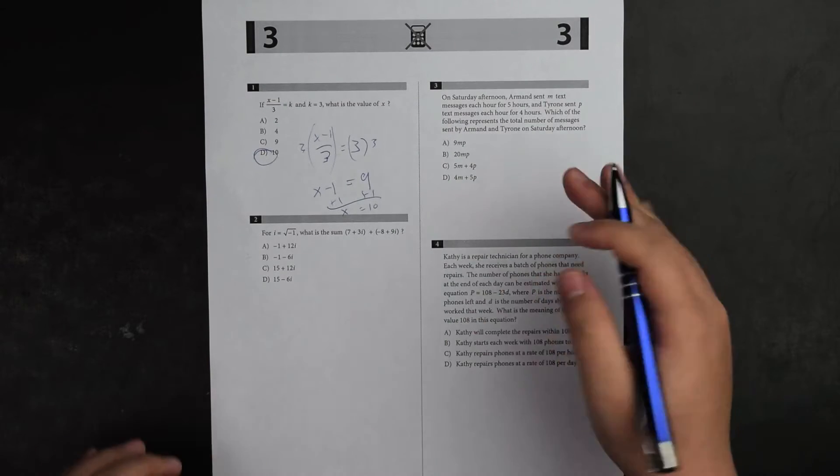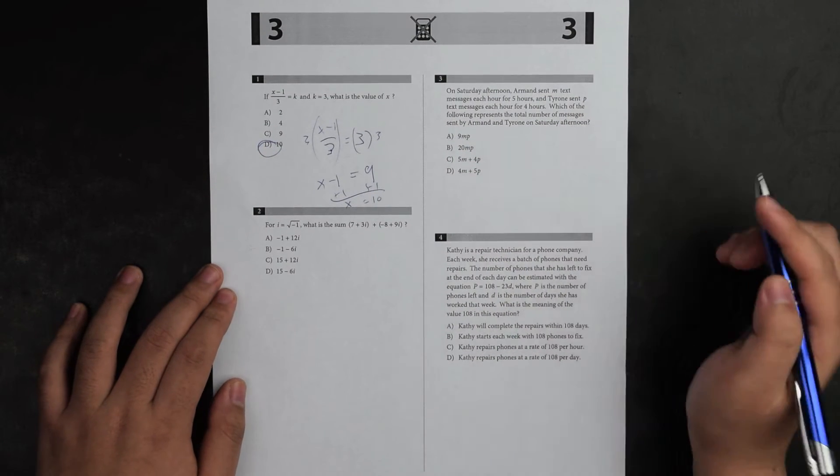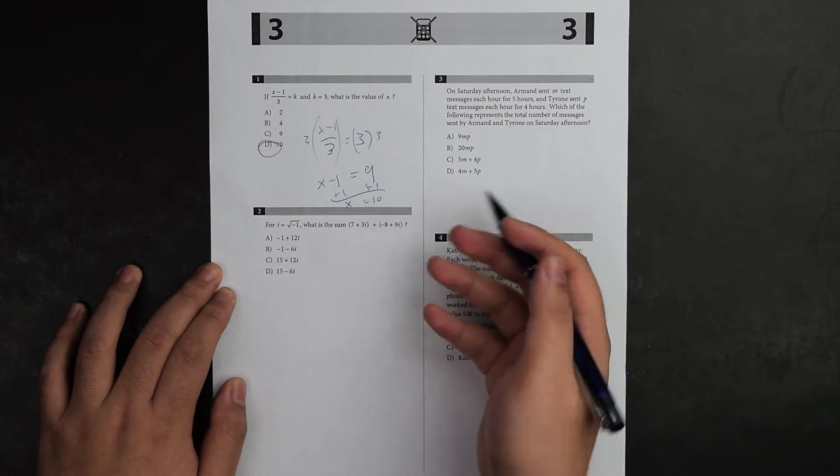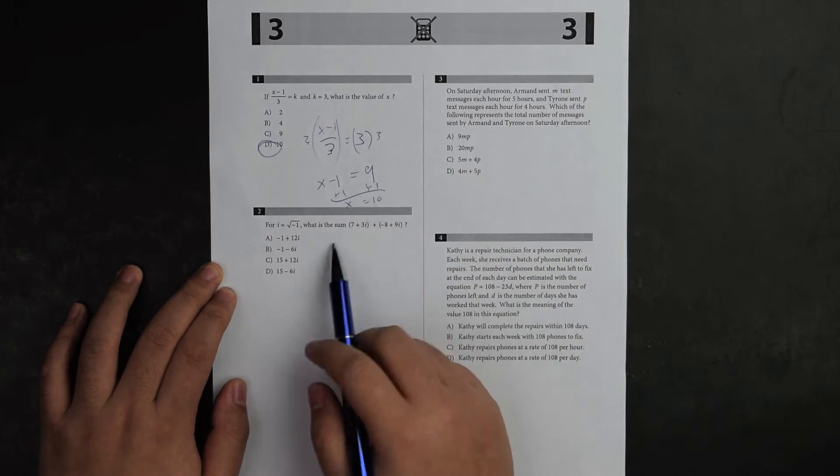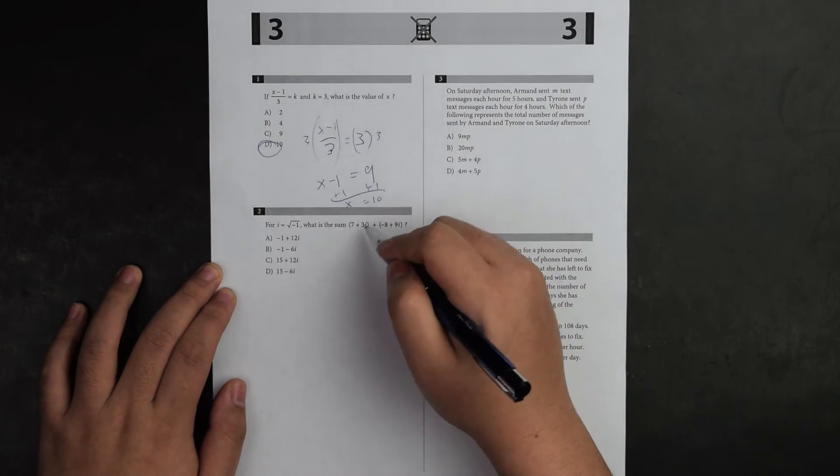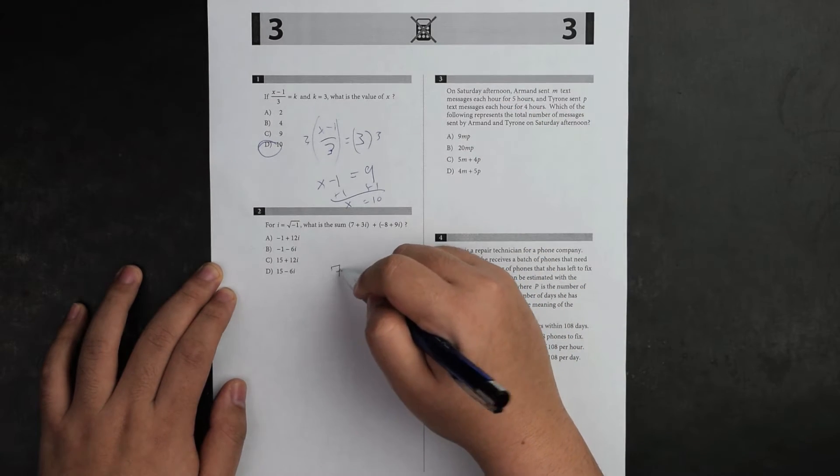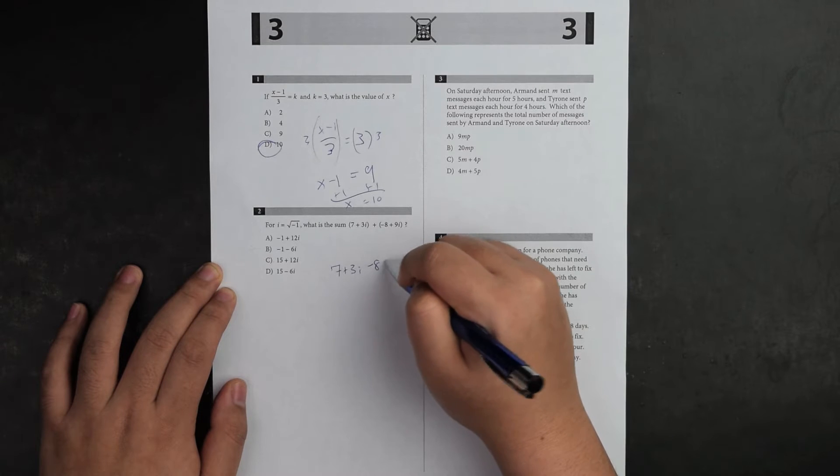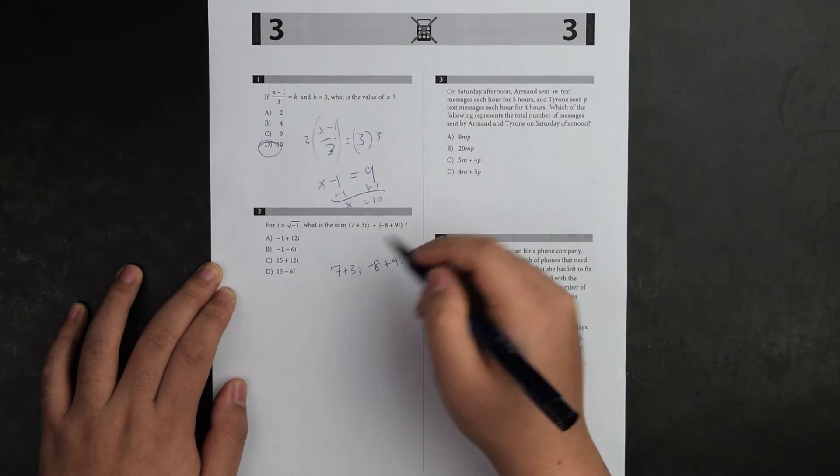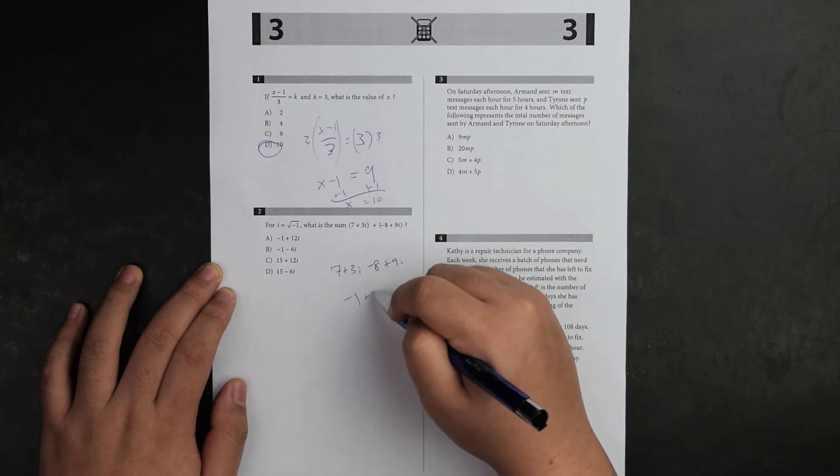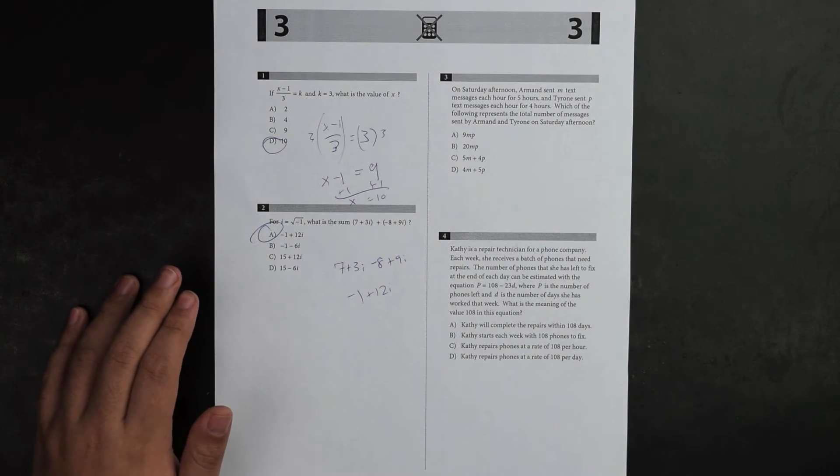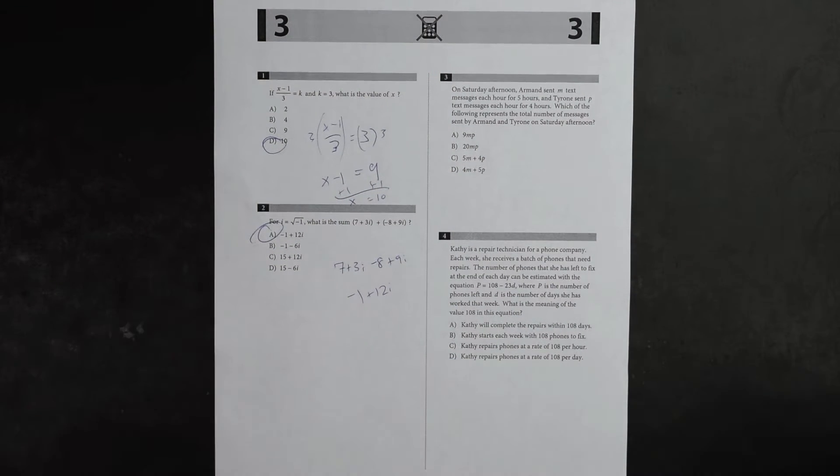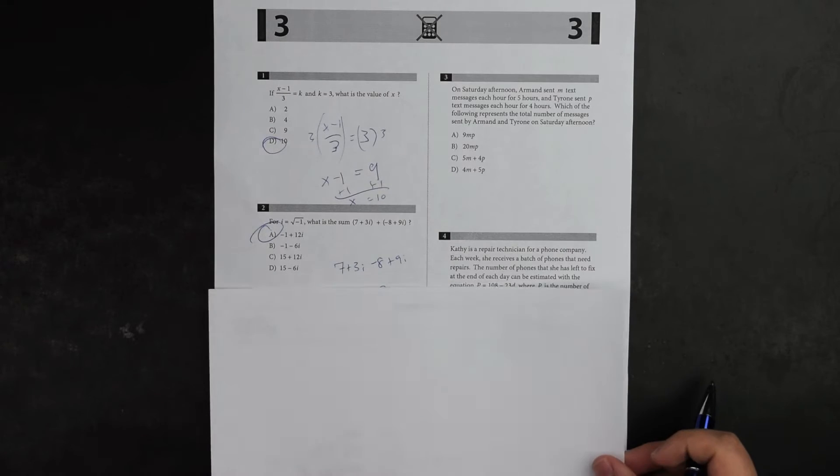I'm going to continue to number two. The question says i equals negative one with some sum. I notice there's no square root, so I'm going to solve it quickly. It's the same statement because the plus doesn't do much. I add them together and the answer is A.